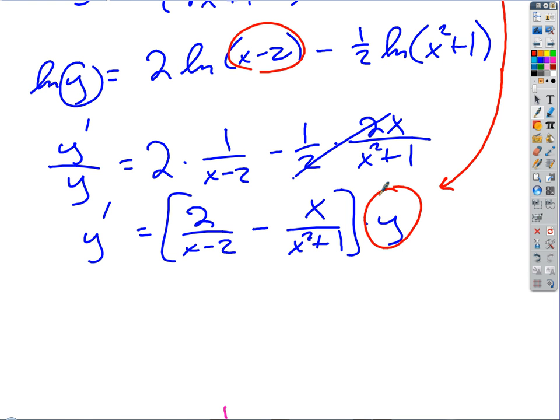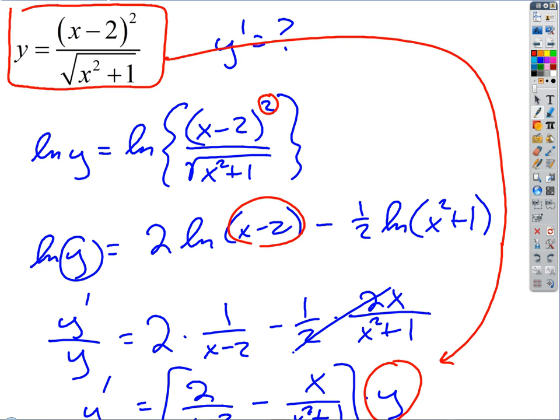So that's a technique. It's called logarithmic differentiation. We use the benefits of the log, the power of the log, to make things simpler. We just took the log on both sides, made things simpler with our properties of logarithms, and then differentiated implicitly to get our y-prime. It's a good trick.